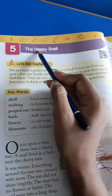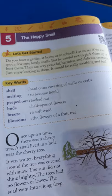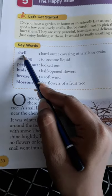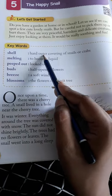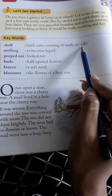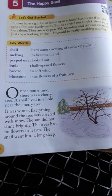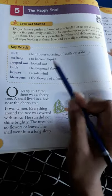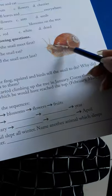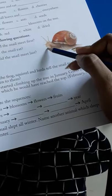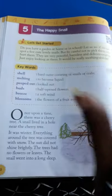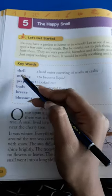Happy means happy, and snail means that animal we just saw. Now first of all we will understand the keywords. The first keyword is 'shell' — the hard outer covering of snails or crabs. Crabs, you know, kekda — the ones that live in water. Similarly, turtles also have a hard covering. That hard covering on a snail is called its shell. It doesn't break easily, and when the snail feels scared or senses something, it shifts itself inside the shell.